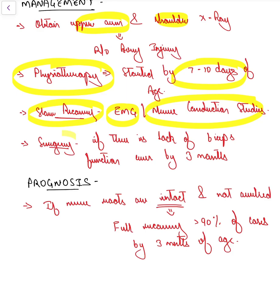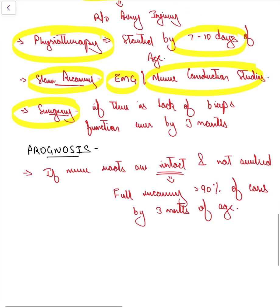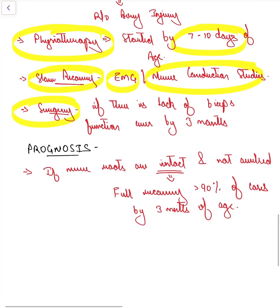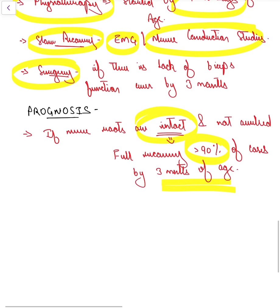Regarding prognosis, if the nerve roots are intact and it is just a stretch injury, full recovery is expected in more than 90 percent of cases by three months of age. By two weeks of life, the functions slowly start coming in, and by three months we can expect full recovery if the nerve roots are intact.